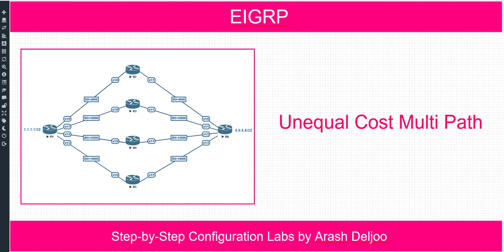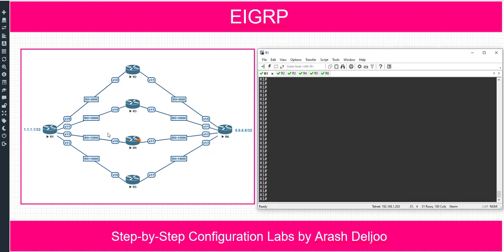In this video I am going to show you how we can configure unequal cost multipath, or unequal load balancing, in EIGRP. From router 1 to router 6, to reach quad6/32, we have 4 paths. Each path has a different bandwidth, which means we have a different metric value for each path, and the best path is from router 5 because it has the highest bandwidth, or lowest metric.